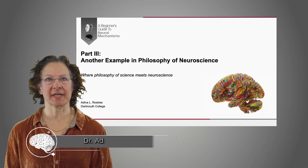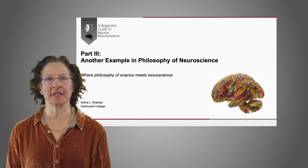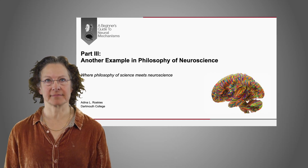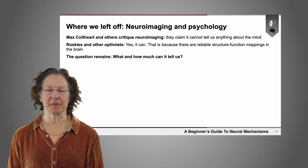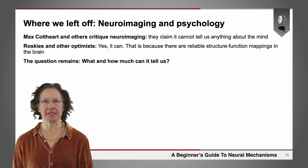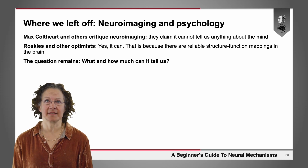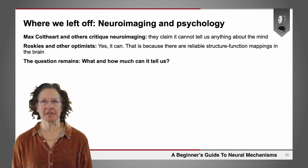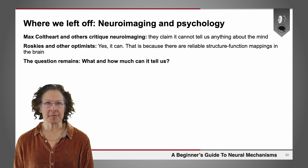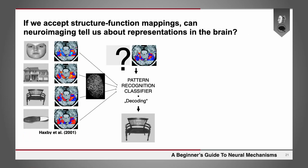Welcome back to a beginner's guide to neural mechanisms. In part three, I'm going to walk you through another example in the philosophy of neuroscience. Where we left off last time, we were talking about neuroimaging and psychology. Max Coulthard and others critique neuroimaging, claiming it can't tell us anything about the mind, whereas I and other optimists think it can because there are reliable structure-function mappings in the brain. The question remains: what and how much can it tell us?